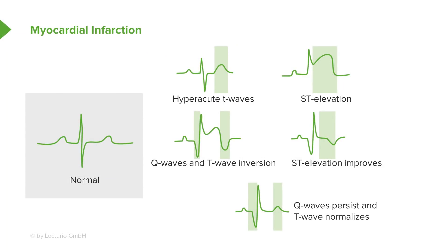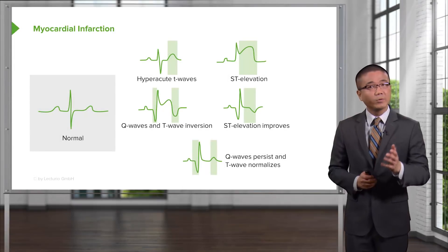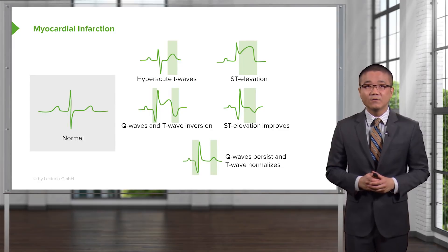Let's move on to a discussion of myocardial infarction in the postoperative period. On the far left side of the screen you see a normal EKG, and as highlighted by the green bars, you see various changes when a patient may have a myocardial infarction. We can see hyperacute T waves, ST elevation, Q waves, and T wave inversions. In the fourth quadrant, you see when the ST elevation has improved depending on when you capture the EKG. In patients who have had a myocardial infarction, Q waves may persist even though the T waves have normalized. Coupled with the troponin, this may be highly sensitive for a myocardial infarction.